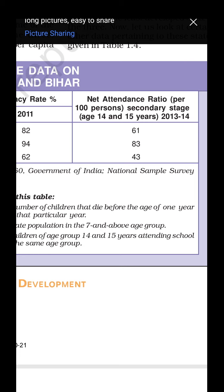Now we will talk about public facilities, and after that we are going to discuss one more important topic which is the Human Development Report. Just as we compared states using multiple factors beyond income, in the same way when we compare countries we will look at other factors beyond per capita income that are equally responsible for development. We will cover this in the next video, and then we will talk about sustainable development.